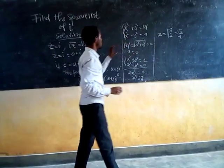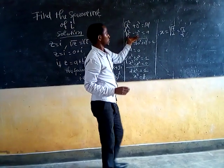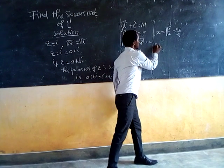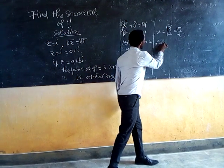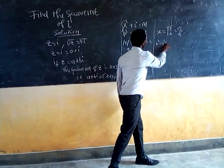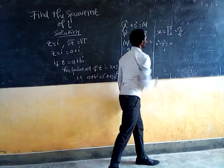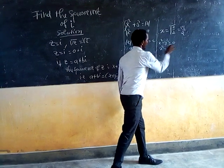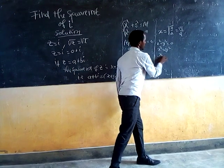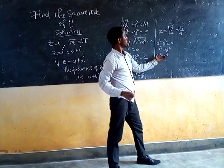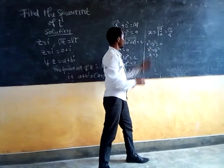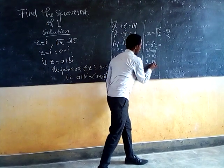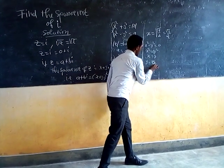Since the modulus of z equals 1, and x squared minus y squared equals 0, we get x squared equals y squared, so y equals square root of 2 over 2.